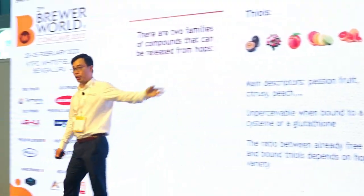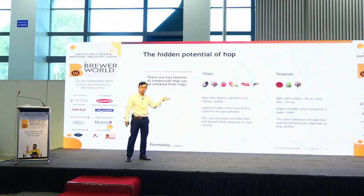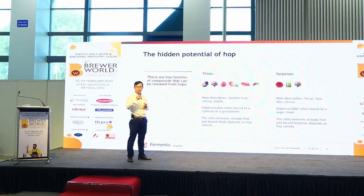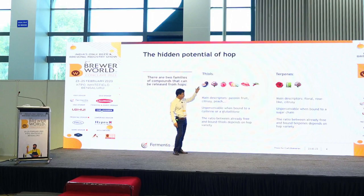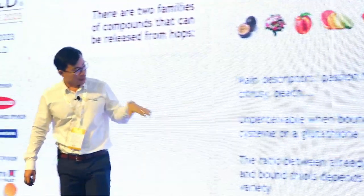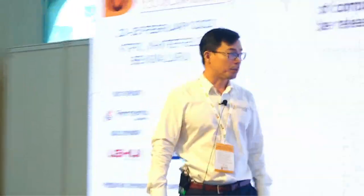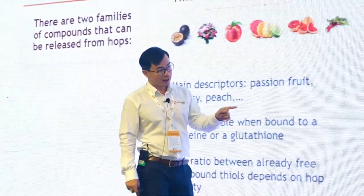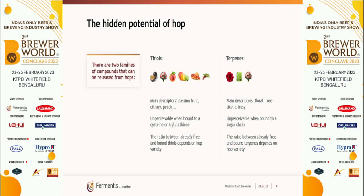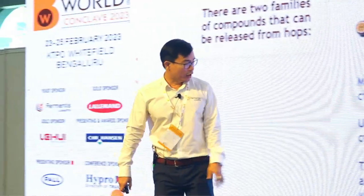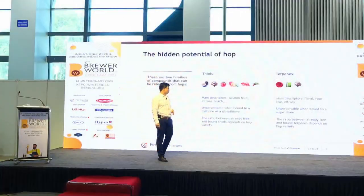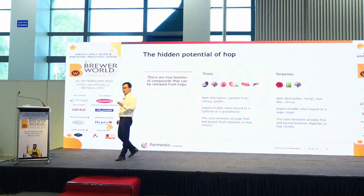Sometimes people sense passion fruit while others sense tropical or stone fruit — not necessarily exactly the same descriptor, but in the same family. Both linalool and thiols share a similar characteristic: you cannot feel them when they are bound to other substances. Linalool is bound to a sugar chain, and thiols are bound to cysteine and glutathione. The free form you get directly; the potential form requires yeast under the right conditions to release it. The ratio of free-form to bound-form depends on the hop variety — different hops have different potential.